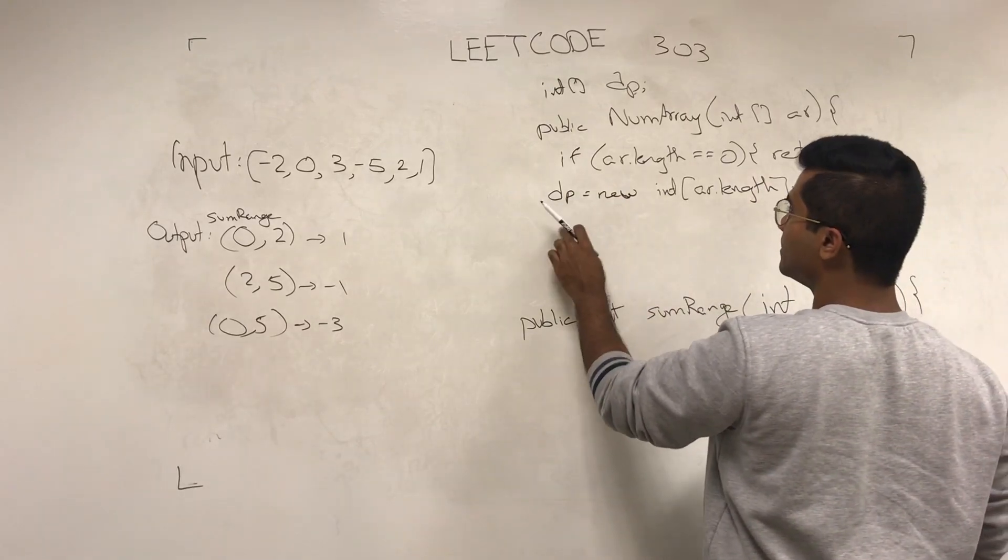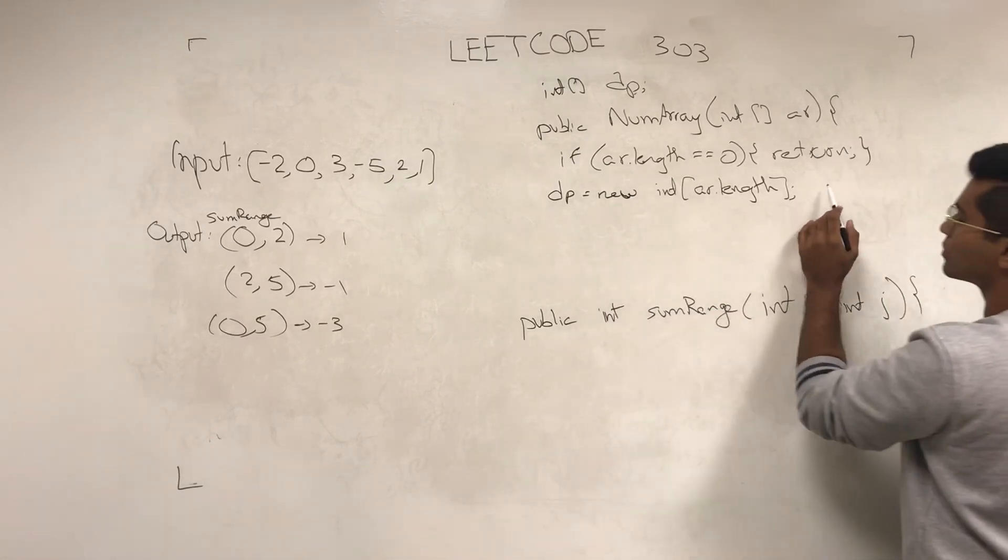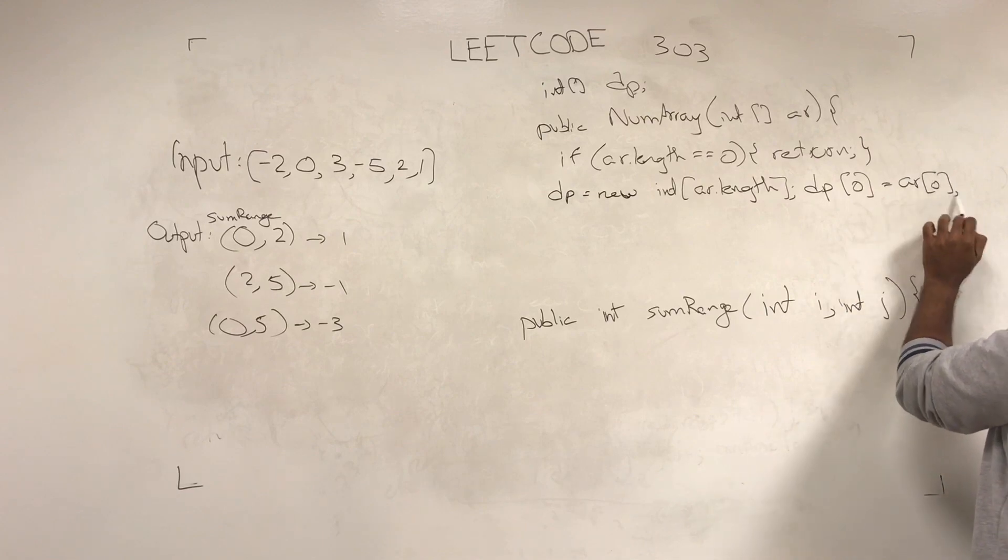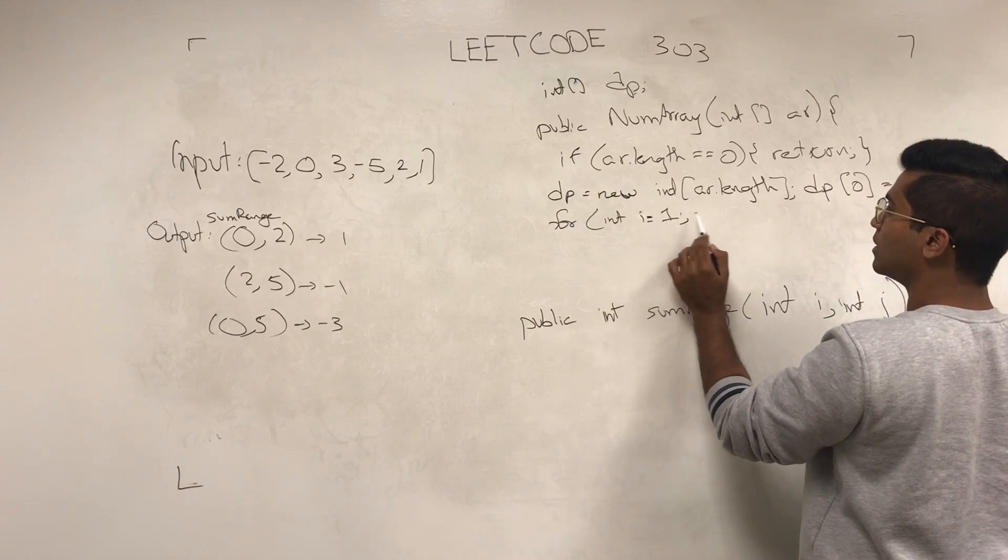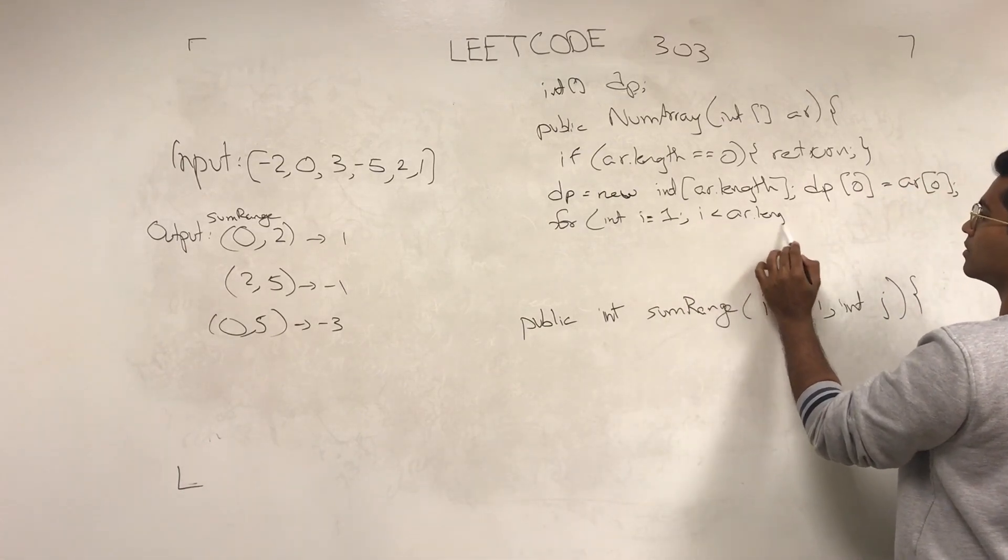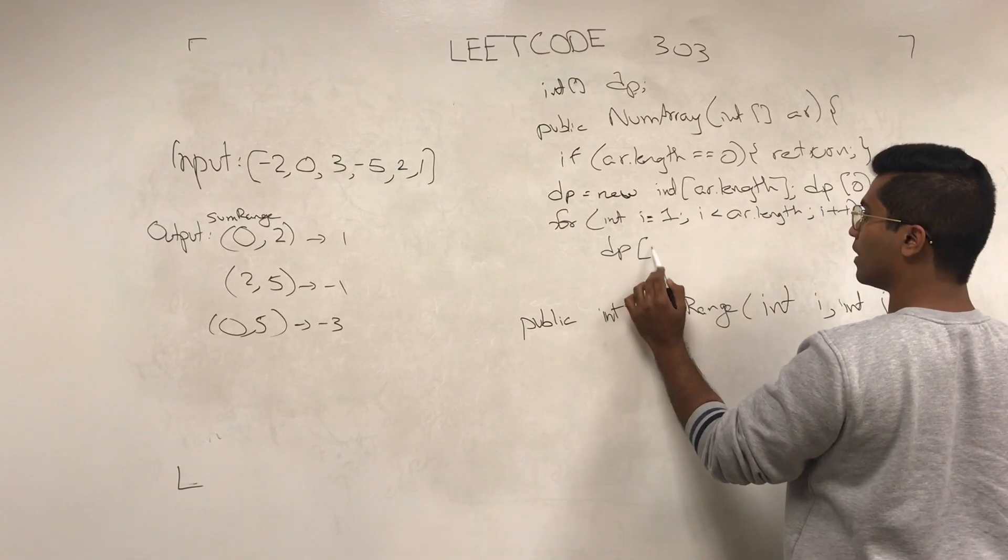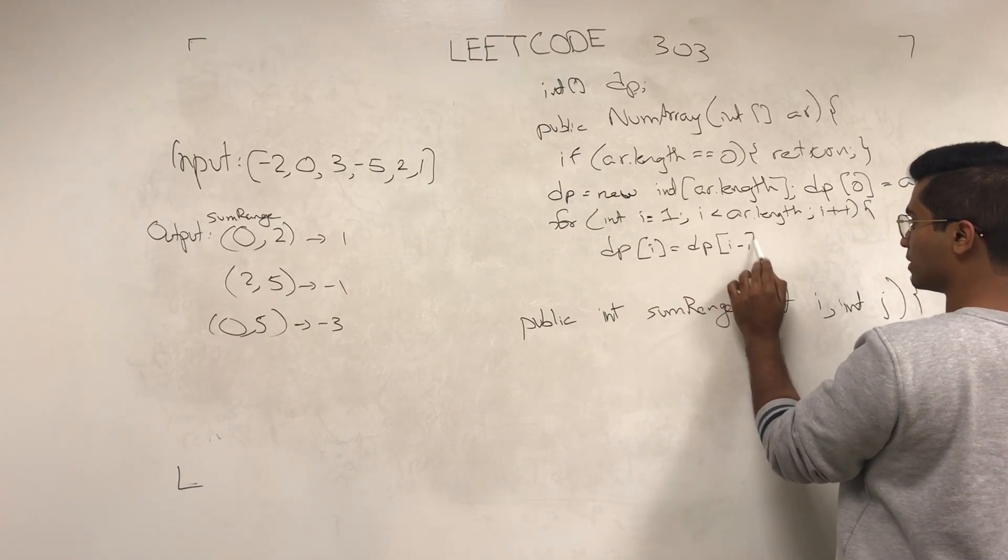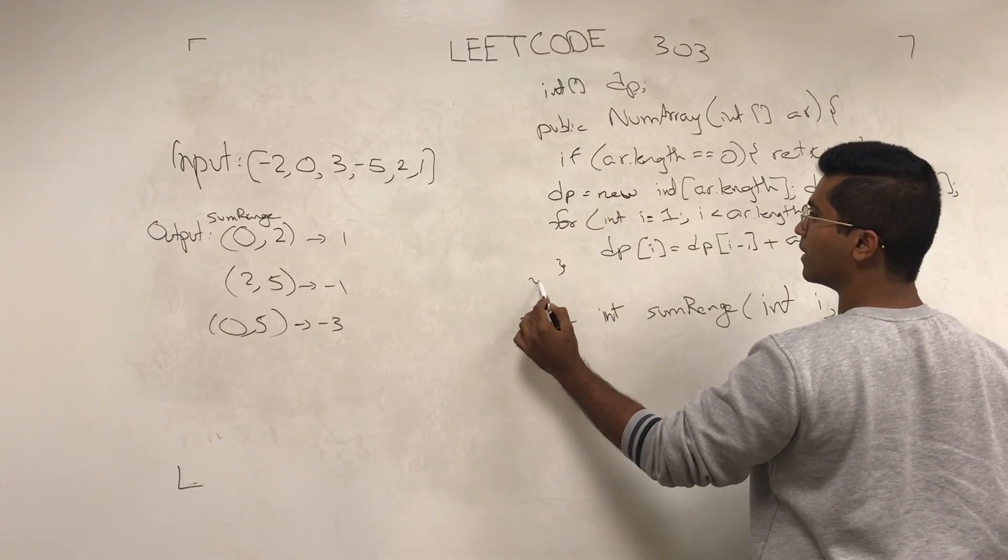DP[0] is going to be the same as AR[0]. Then we're going to iterate over it: for int i = 1; i < AR.length; i++, DP[i] is going to be DP[i-1] plus AR[i]. And that's the constructor.